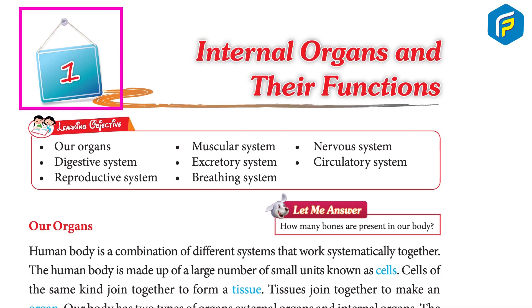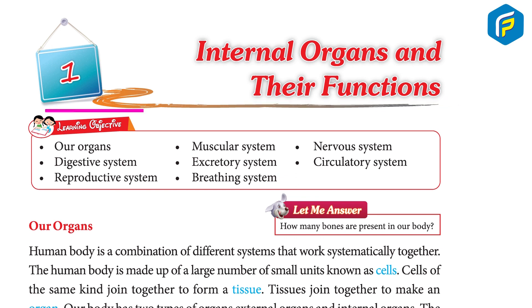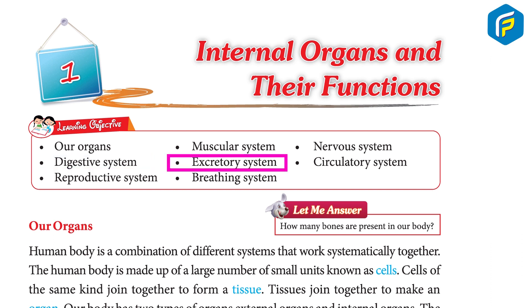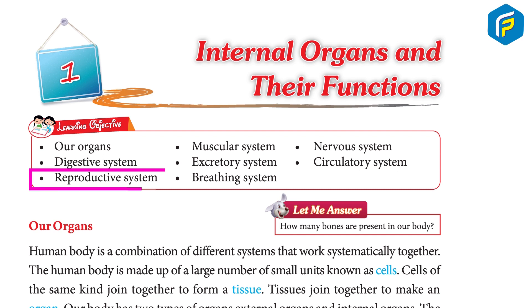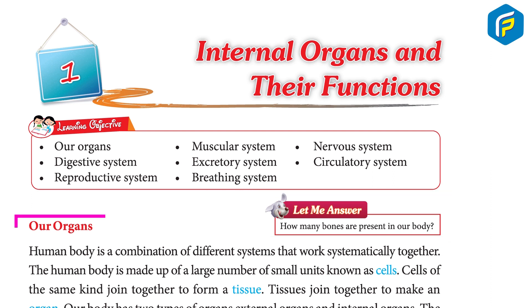Chapter 1: Internal Organs and Their Functions. Learning objective: our organs — muscular system, nervous system, digestive system, excretory system, circulatory system, reproductive system, breathing system. How many organs are present in our body?